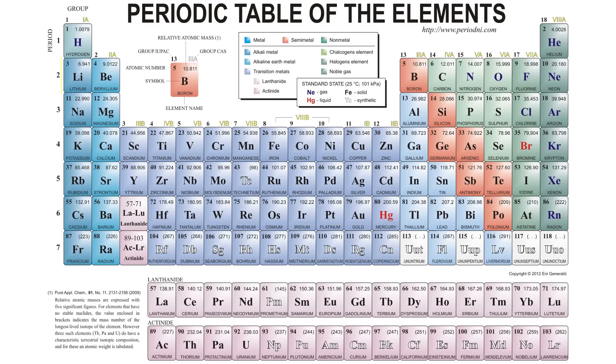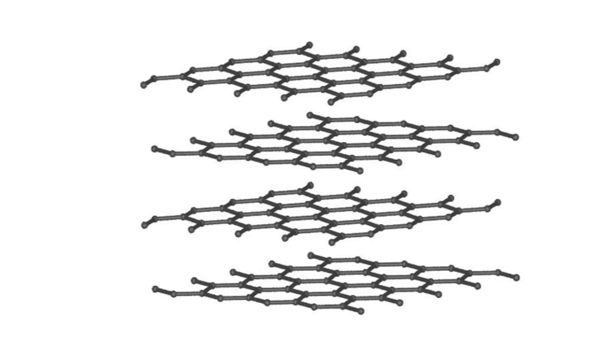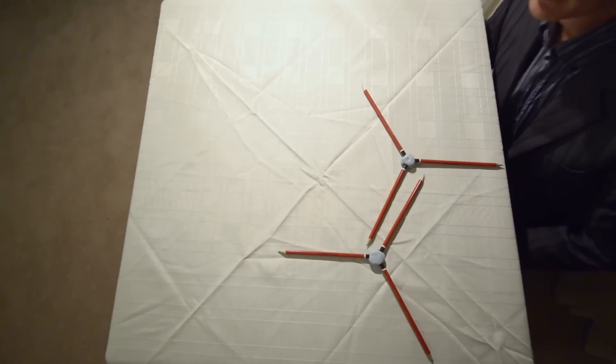Carbon has one, two, three, four valence electrons. Valence electrons are what atoms use to bond to other atoms. Diamonds use all four valence electrons to form their three-dimensional tetrahedral structure, whereas in graphite the valence electrons are formed in a flat hexagon sheet. Each atom uses three of its valence electrons to form a bond with its closest carbon atom neighbour.